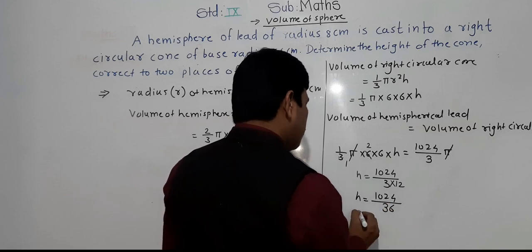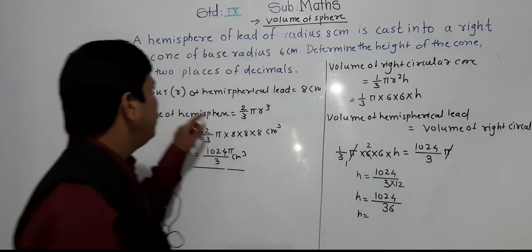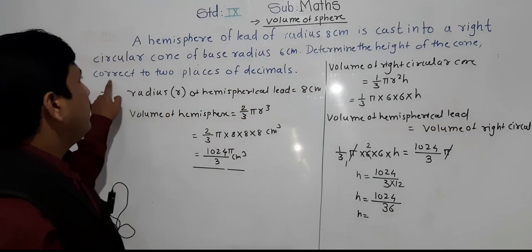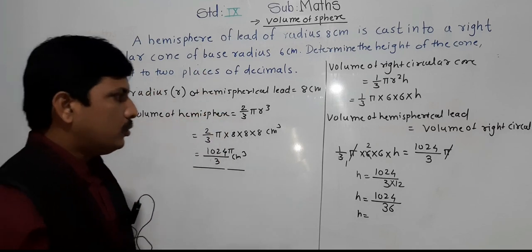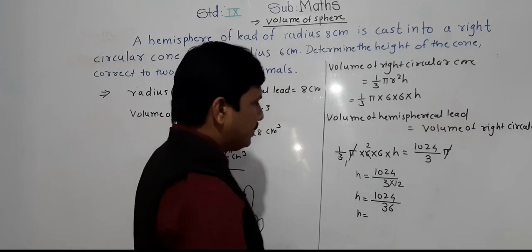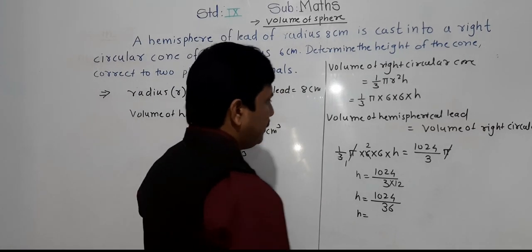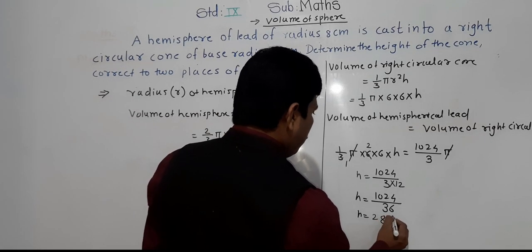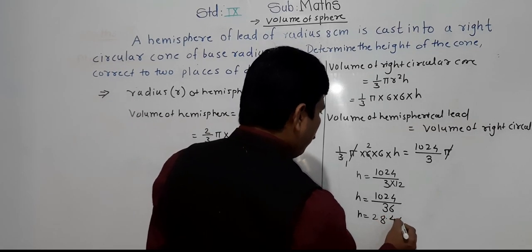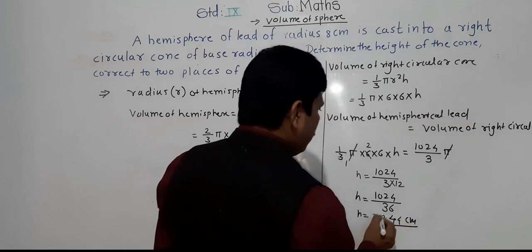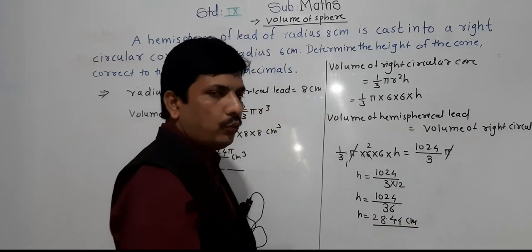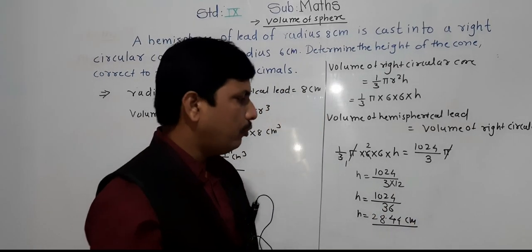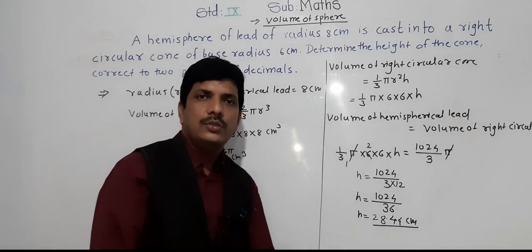They are asking the answer correct to two places of decimal. Dividing 1024 by 36 gives H equals 28.44 centimeter. Very simple question.